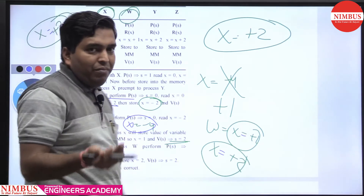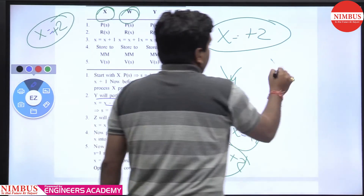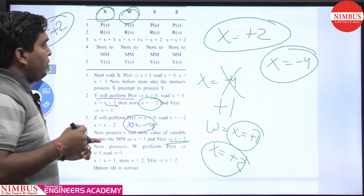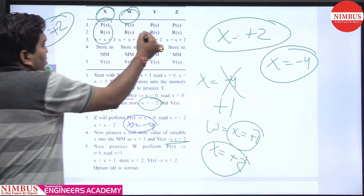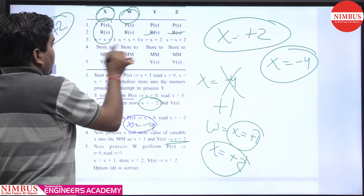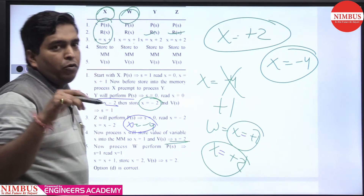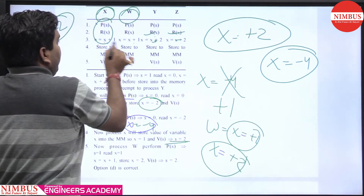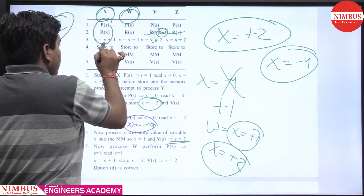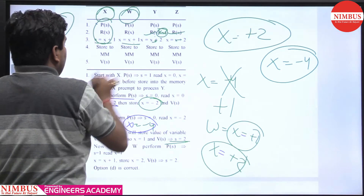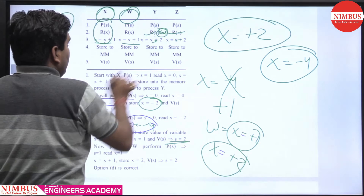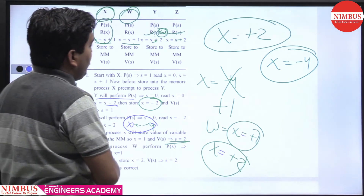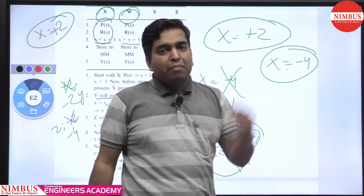The maximum value is plus 2. What about the minimum? The minimum is minus 4. For maximum, both updates override giving: minus 4 is overridden by plus 1, then plus 2. For minimum value, process x increments to plus 1 and plus 2, but then y executes giving minus 2 and z executes giving minus 4. So maximum value is plus 2 and minimum value is minus 4.